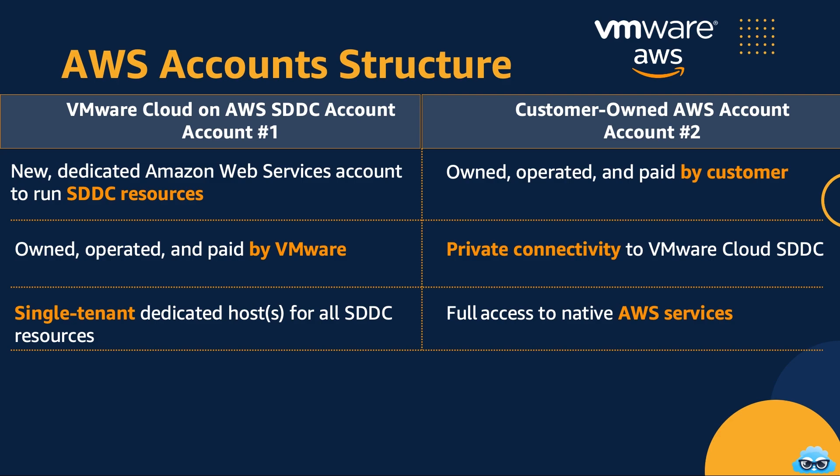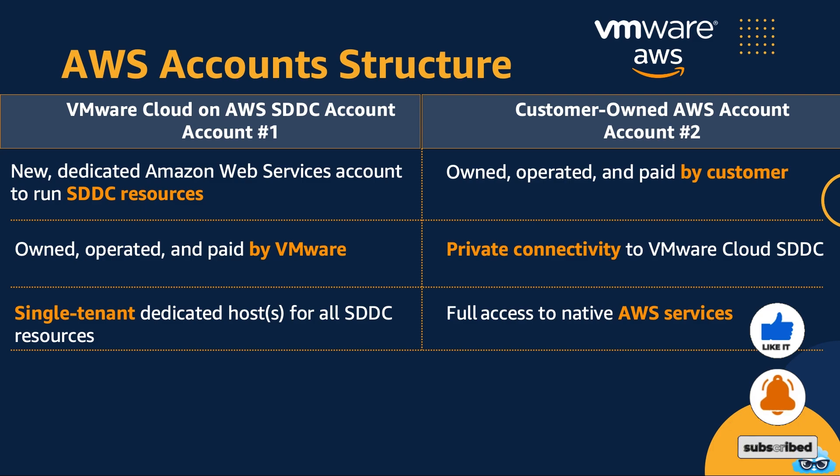AWS account number two is operated by the customer. This account is owned, operated and paid for by you, the customer. It's your playground for leveraging native AWS services. Here, you can run and integrate AWS services to complement your VMware Cloud on AWS environment. It's all about innovation, scalability and flexibility.